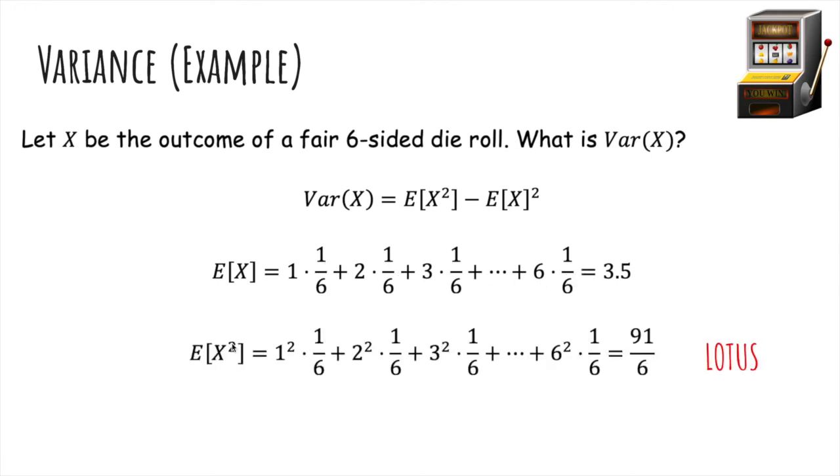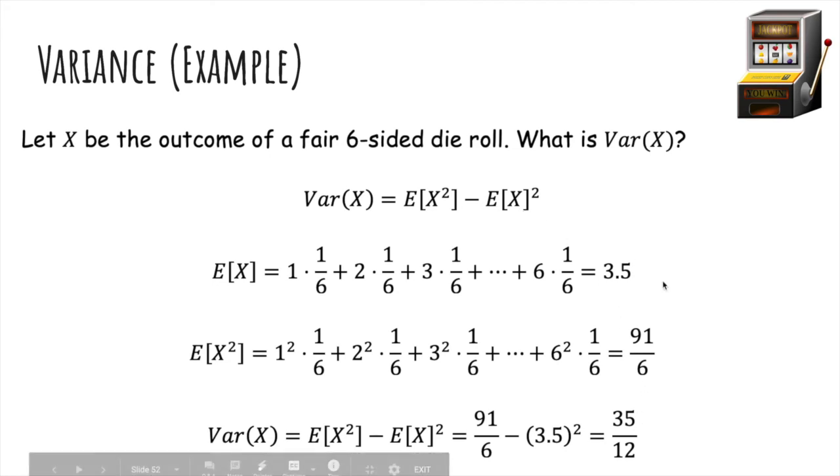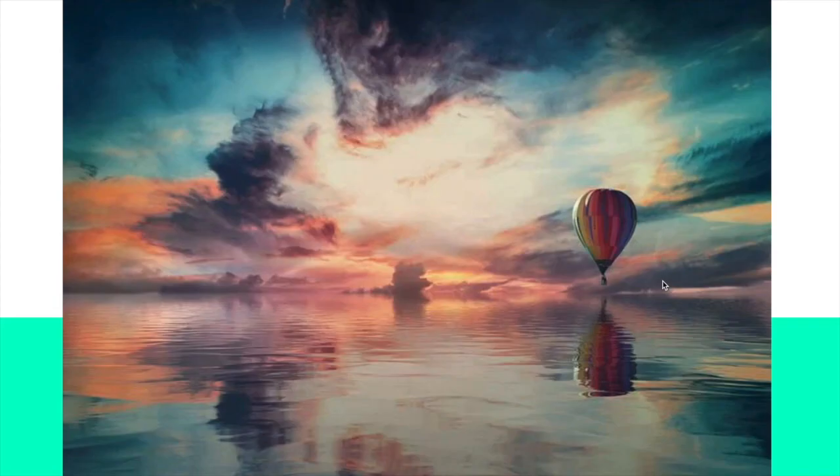And the expected value of x squared, remember by LOTUS, you just square each value before multiplying by the probability. And remember, note that you don't square the probabilities as well. Otherwise, they wouldn't add up to 1. And you get this. And so the variance is just expected value of x squared minus expected value of x squared.